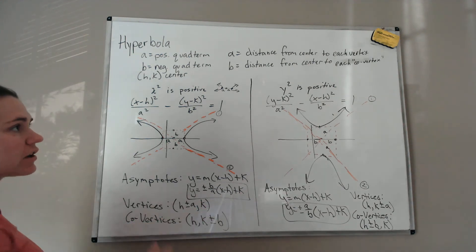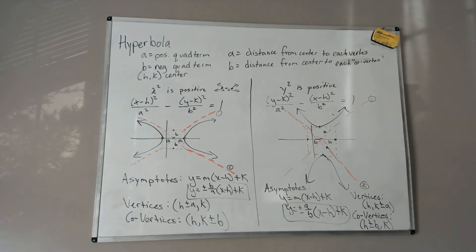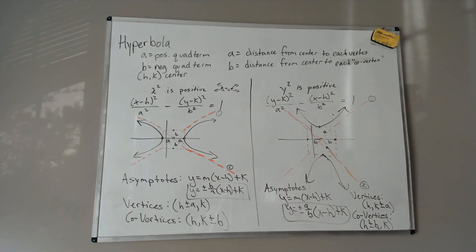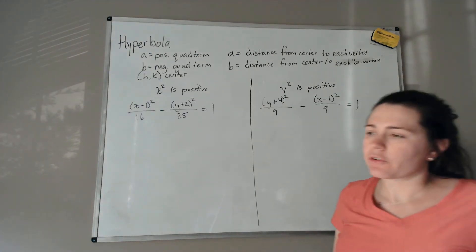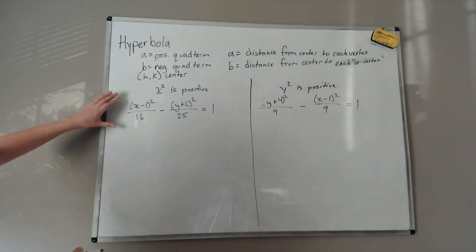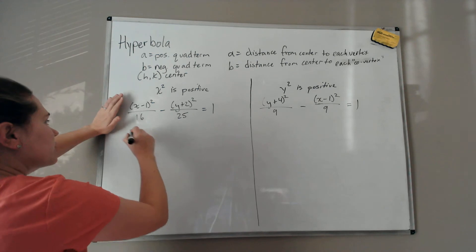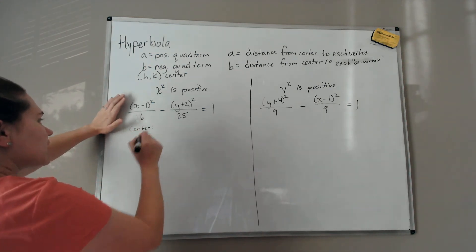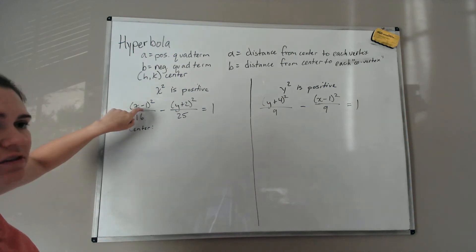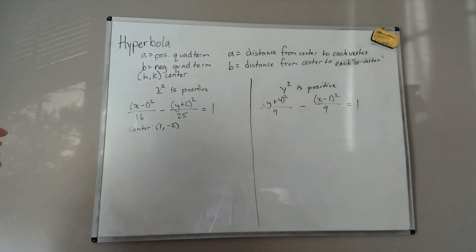Now we'll do two examples, then a third incorporating everything. For the first example, notice x-squared is positive, confirming this is a hyperbola — two quadratic terms with one negative. We pull out the center h, k: what makes x-term zero is 1, what makes y-term zero is negative 2, so the center is (1, −2).